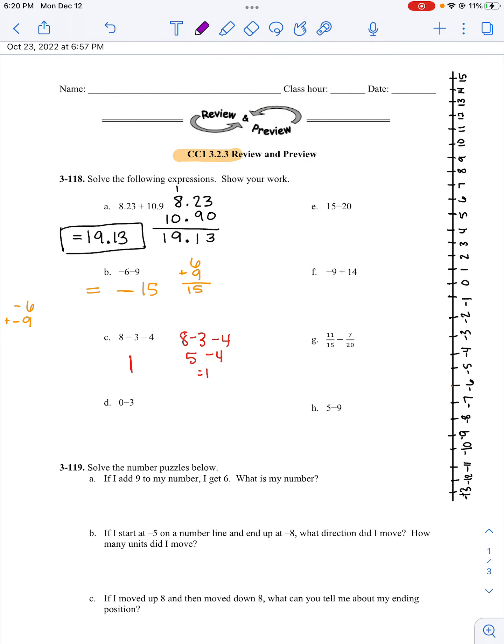Part D: I start at 0. I subtract 3. So, 1, 2, 3. I end up at negative 3. It does say to show your work. If you're using a number line, that's your work.